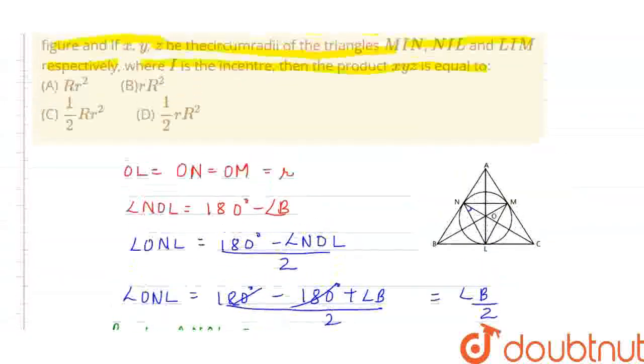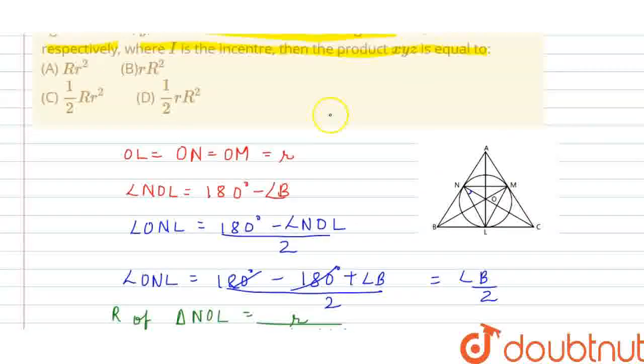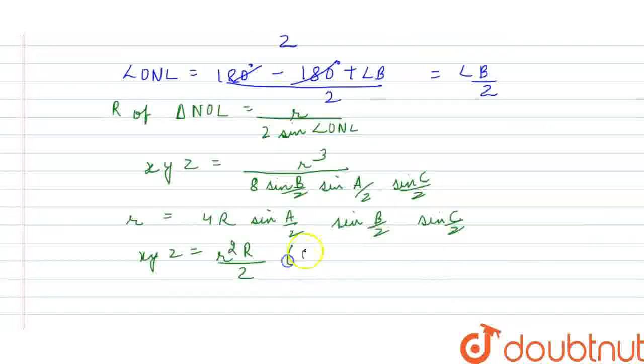Now, let's compare with the options. Which of the following options is the correct option? It is R squared R, so it means that option C is the correct option. I hope the explanation is clear to you all, thank you.